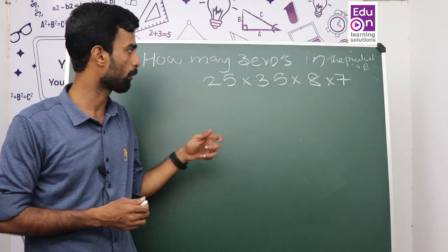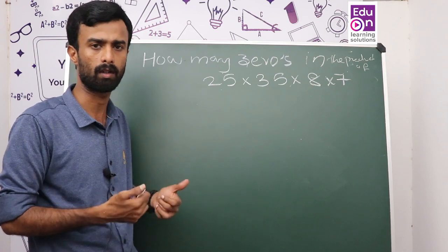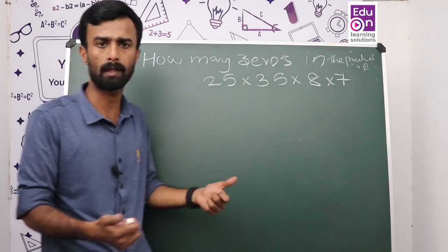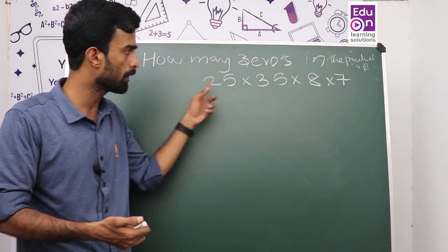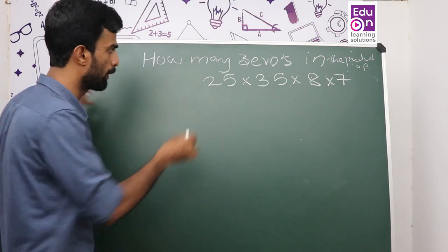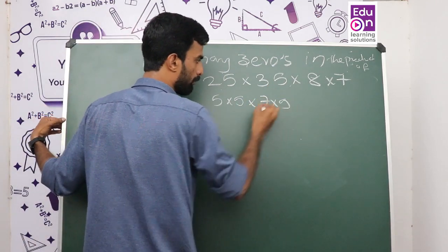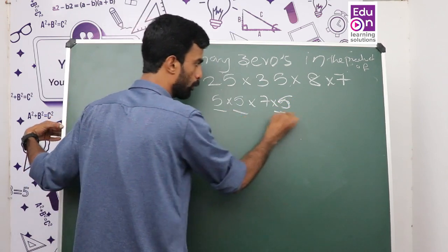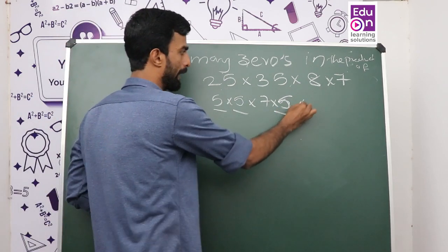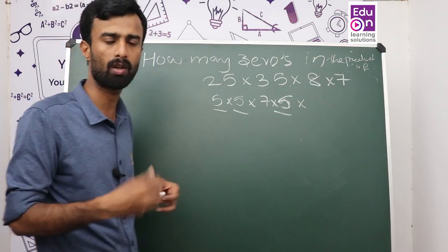How many zeros are in the product of 25 times 35 times 85? That means we need to find how many trailing zeros the product has. We are going to count the factors — 8 is the format, 8 is the 14th time. We are going to add 2 to the format and add 0.